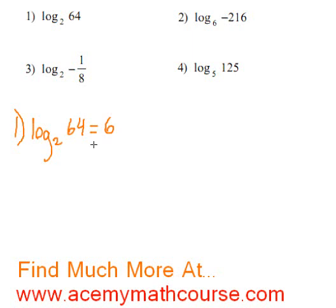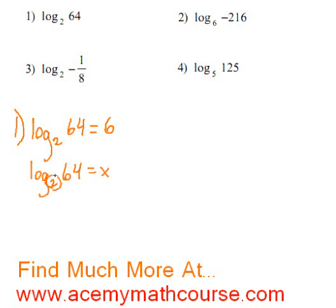I'm going to go a little bit slower and format this in a different way. Let's say we can't figure that out yet — we don't know that 2 to the power of 6 is 64. So let's put an x here. If we convert this to exponential form, we can kick the 2 over and get: 64 is equivalent to 2 to the power of x.